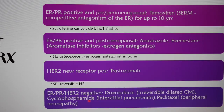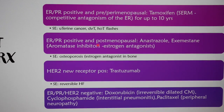If the breast cancer is ER, PR, and HER2 negative (triple negative), we still have medications: doxorubicin, which causes irreversible dilated cardiomyopathy (in contrast to trastuzumab, which causes reversible heart failure); cyclophosphamide, which can cause interstitial pneumonitis; and paclitaxel, with a major side effect of peripheral neuropathy. Everything on the slide is high yield and testable.